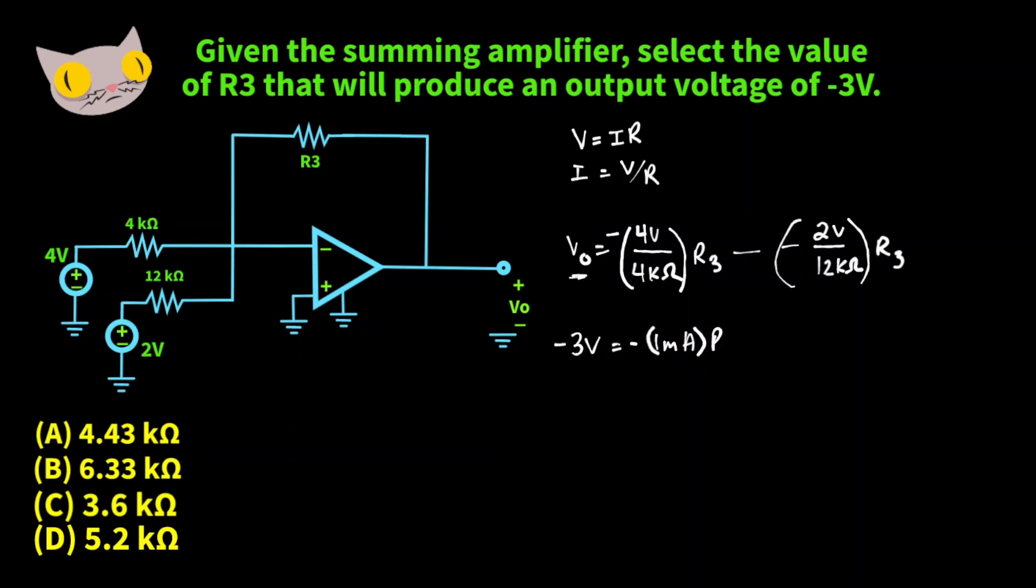Multiply that by R3 minus negative 2 volts over 12,000 ohms. That's going to give us 1 sixth milliamp. And we have two negative signs here. So this is going to be a positive. And we'll multiply this by R3.